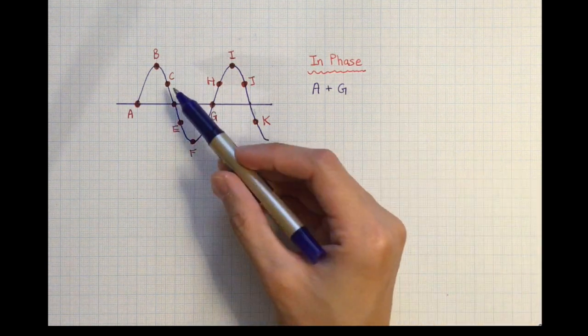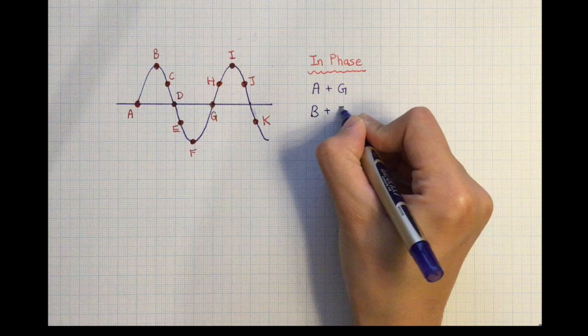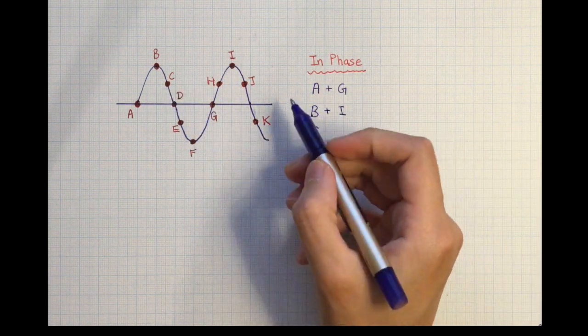Position B will be in phase with I, and C is going to be in phase with J.